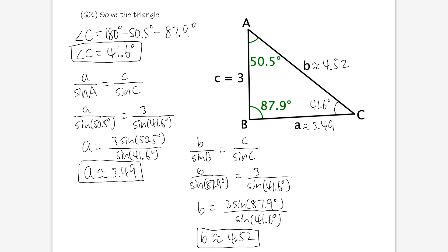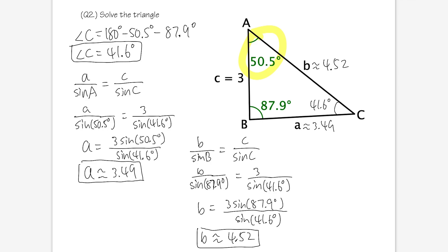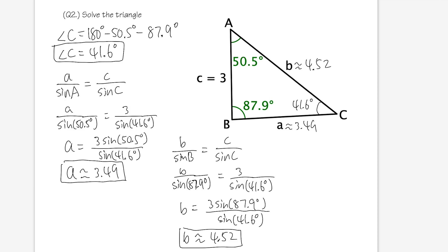As a quick check: angle B at 87.9° is the largest angle, and side b at 4.52 is indeed the largest side — larger than both 3 and 3.49. Similarly, angle A at 50.5° is larger than angle C at 41.6°, so side a should be longer than side c, which is also true.